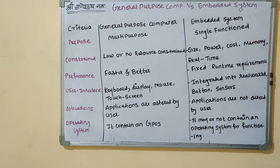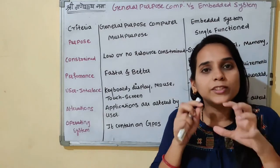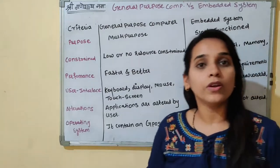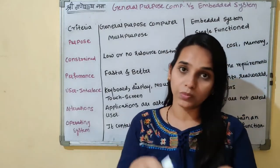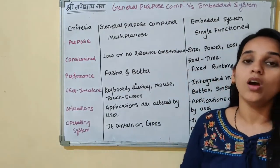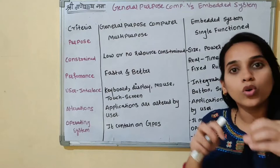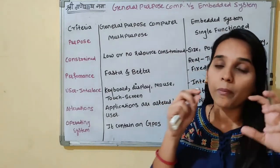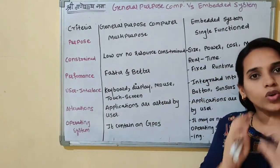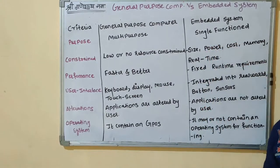Whereas embedded systems are single function. This means they are designed to achieve a specific task. For example, a washing machine is only for washing. A microwave oven — its work is to cook the food. So these tasks and systems are specific; we call it single function.